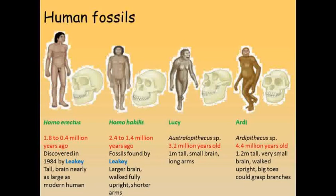Leakey was a scientist who worked in East Africa studying human evolution and animal behaviour, and he discovered many important fossils, including examples of Homo erectus and Homo habilis. A genus that was an ancestor of ours, but is now totally extinct, was Australopithecus.